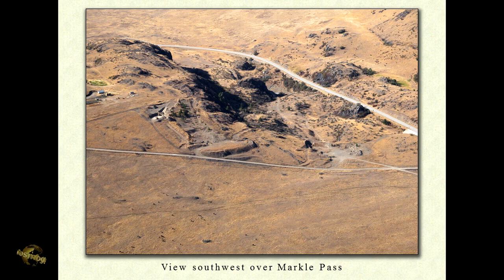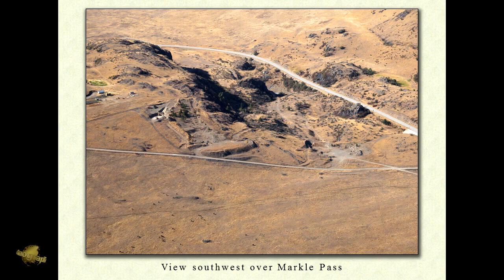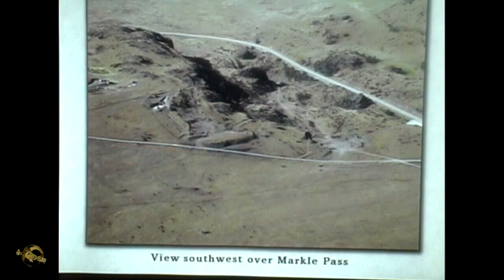View southwest over Marco Pass. This is a feature that probably most people would look at and just never have a second thought of. But now that you guys are becoming trained catastrophists, you can look at that and see that what you're seeing there is the after effects of mega-scale water erosion. Just a gushing bloom of turbulent water going from the right through this way down to the left.